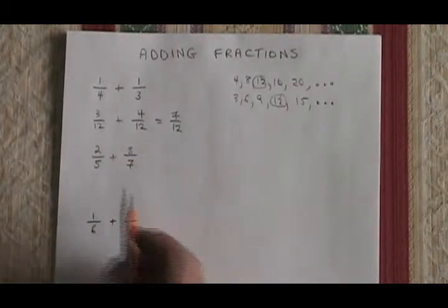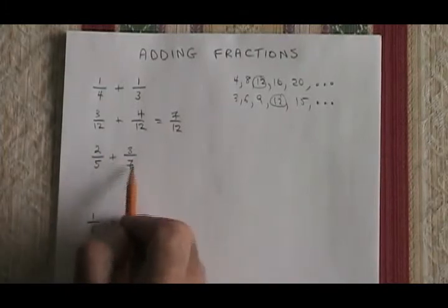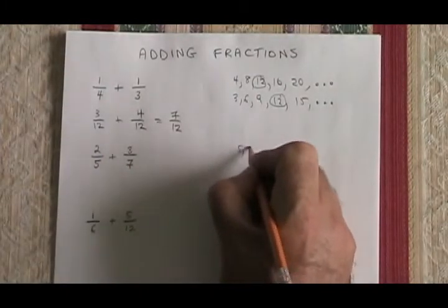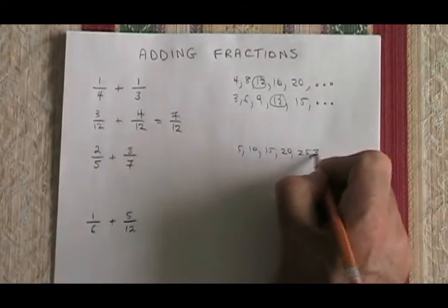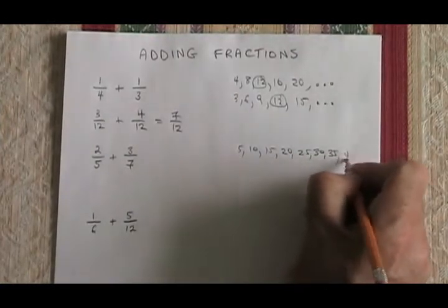Let's do some more examples. Here we have denominator 5 and denominator 7. I list their multiples: 5, 10, 15, 20, 25, 30, 35, 40, and it keeps going.